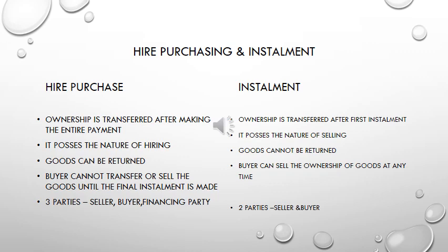In hire purchase, the purpose is hiring, and ownership transfers with the final installment. In an installment sale, the nature is selling, and ownership can transfer at the beginning. There are three parties in hire purchase: seller, buyer, and the financing company; whereas installment has only two parties: buyer and seller.